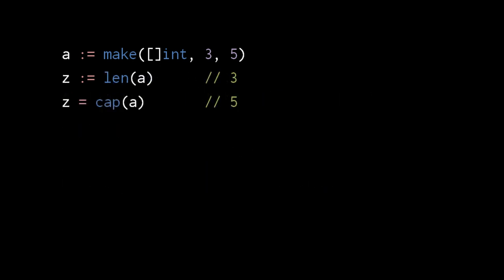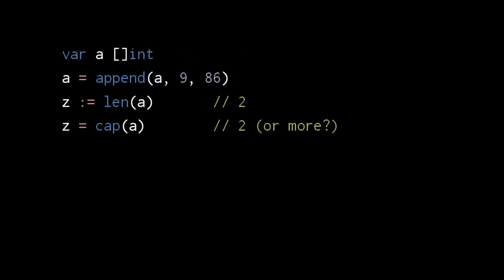To get the length and capacity of a slice, we use the built-in functions len and cap. An uninitialized slice has a length and capacity of 0. If we append to a zero slice, we get a non-zero slice with the appended values. When append creates a new, larger array, it sometimes chooses to make an array larger than is needed for the new values — for example, the new slice created by append might have a capacity larger than 2. Append does this as an optimization: if we append to an array once, we'll likely append to it again, so allocating extra space may make future appends cheaper if they can use existing arrays rather than creating new ones.